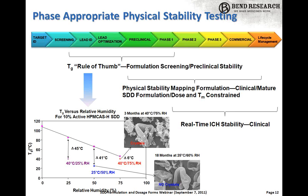As development progresses, real-time stability samples are set up, checking them against predictions and expectations rather than simply hoping for the best. When a formulation is close to a potential edge of failure — say around 10 degrees separation between TG and storage temperature — more advanced kinetic methods can be used to get a quantitative understanding of crystallization kinetics.